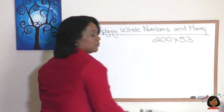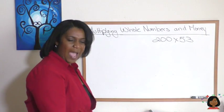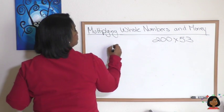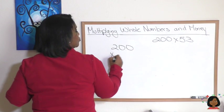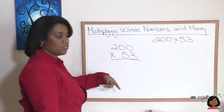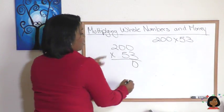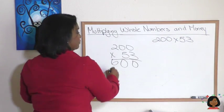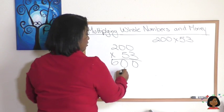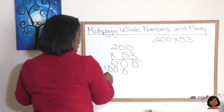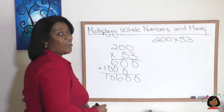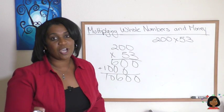To do 200 times 53, we'd line up our 200 and multiply times 53. Here we go: 3 times 200 is 600. Do it again: 200 times 5, 5 times zero is zero, 5 times zero is zero, 5 times 2 is 10. Now we are ready to add. Okay, not too bad, but there's such a shorter way to do it.